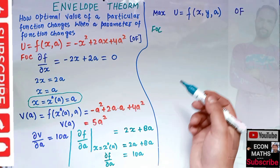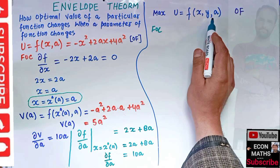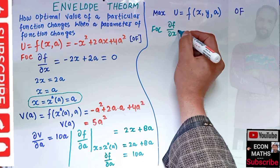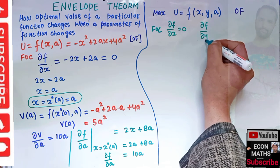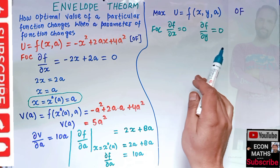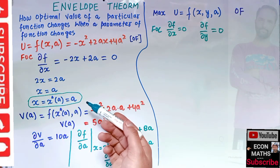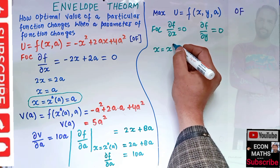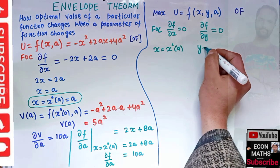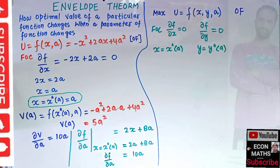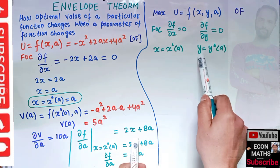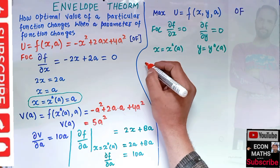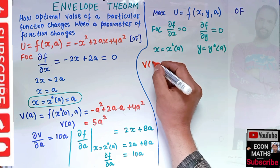The first order conditions require that the partial derivative of f with respect to x equals zero, and the partial derivative of f with respect to y equals zero. If the second order conditions are also met, solving gives us x equals x-star(a) and y equals y-star(a).